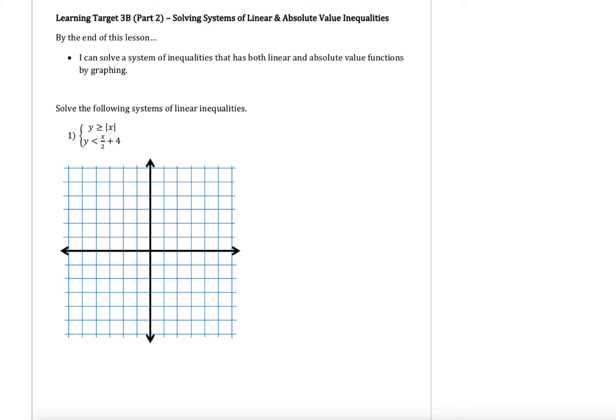On with learning target 3b in this video. In this part 2, we're going to learn how to solve a system of inequalities that has both a linear and an absolute value function. So in part 1 of this video, we looked at systems of inequalities that had two linear functions — both graphs were straight lines — and we identified our slope and our y-intercept to be able to graph those.